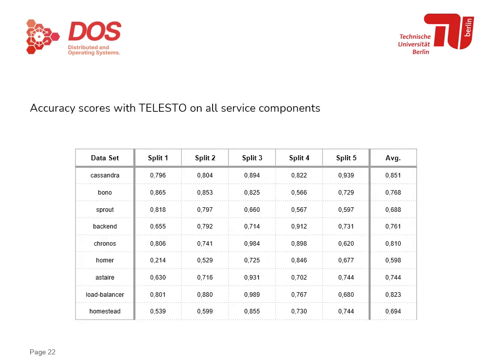For completeness, we present results of our approach on all other service components using accuracy scores. There is quite a lot of variance across service components: on Cassandra we have almost 85% accuracy, whereas on the Homer service component it is only around 60%. Differences between splits can also be quite dramatic, due to limited available data, but this also shows that each injected anomaly has very unique characteristics.